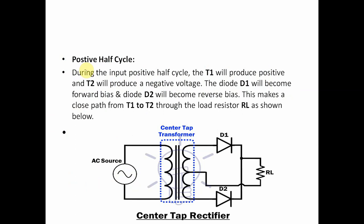During the positive half cycle, T1 is the positive terminal, T2 is the center reference terminal, and T3 is the negative terminal. T1 is positive with respect to T2 and T3. So during the positive half cycle, T1 is positive and T3 is negative, and T2 is also negative. Therefore, diode D1 acts as forward biased.